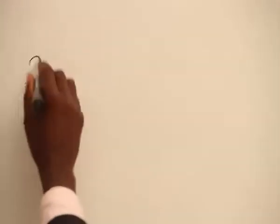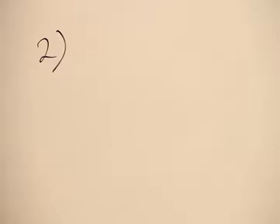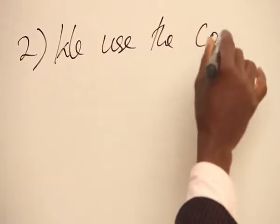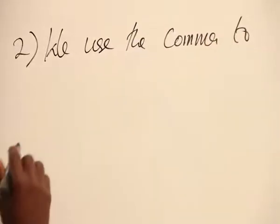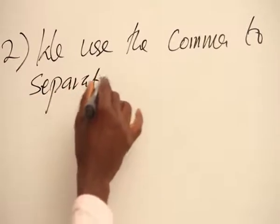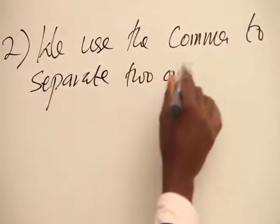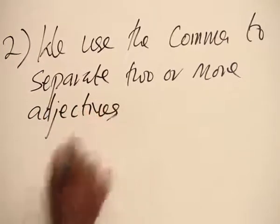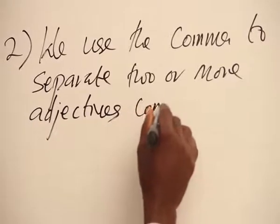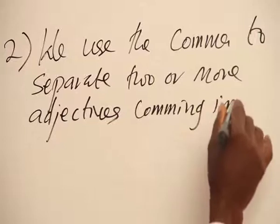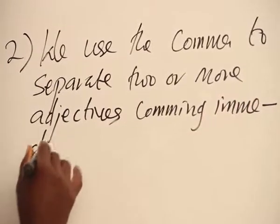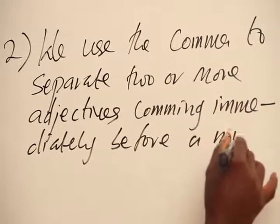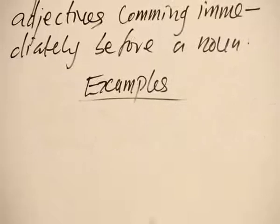So, we move on to Rule 2, and that Rule 2, we use the comma to separate two or more adjectives coming immediately before a noun. So, let's take examples.